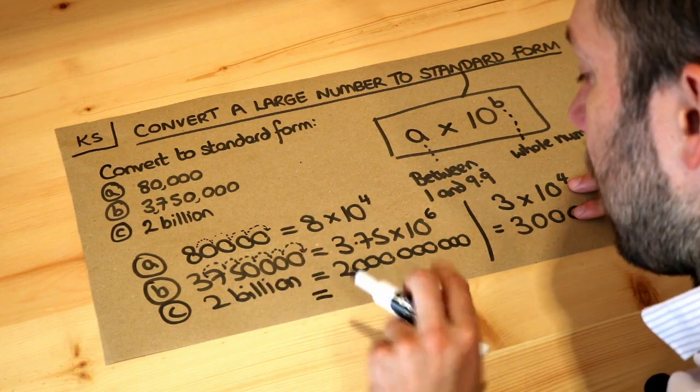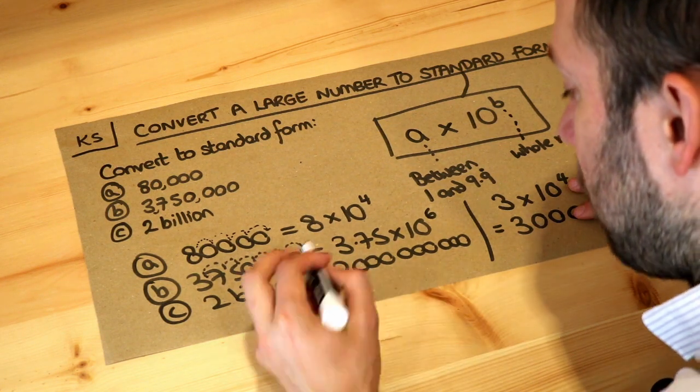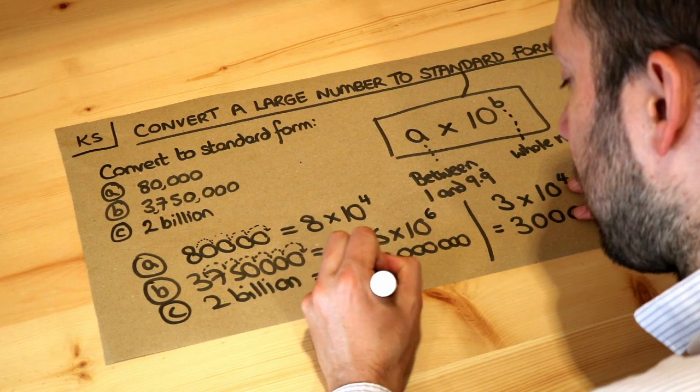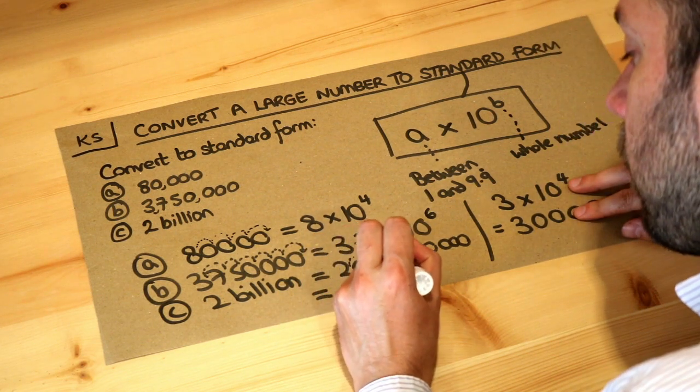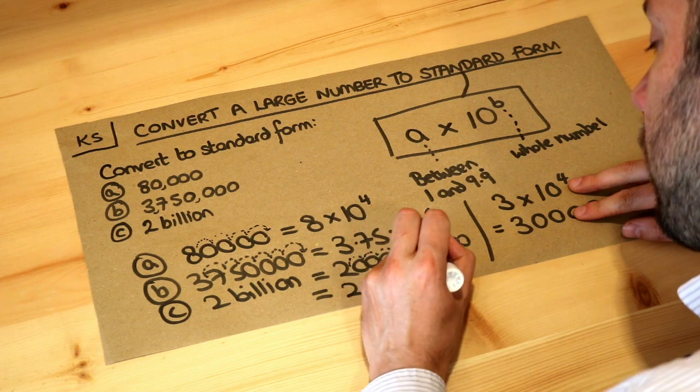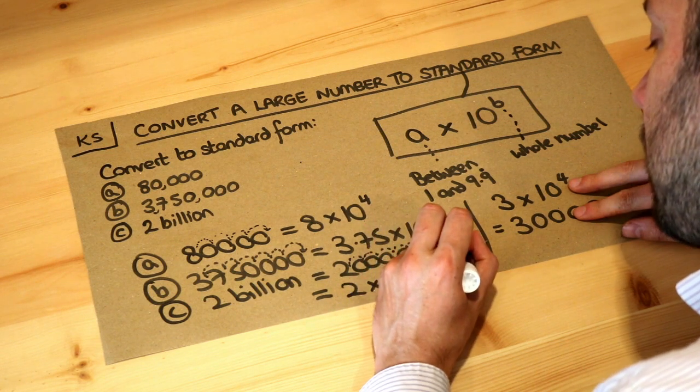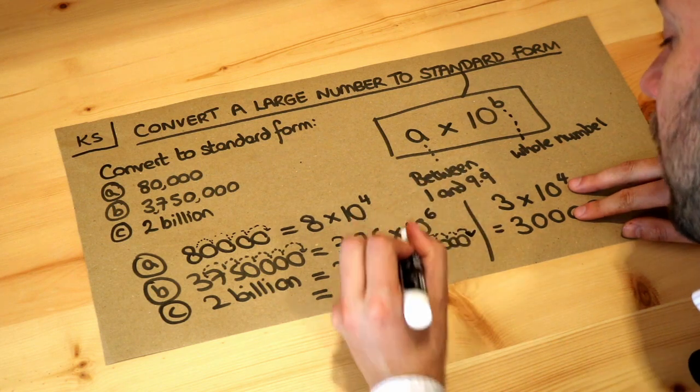So let's think. The decimal point is currently after the 2 because it's 2 times 10 to the power of something. How many times do I have to move? 1, 2, 3, 4, 5, 6, 7, 8, 9 times, so it's times 10 to the 9.